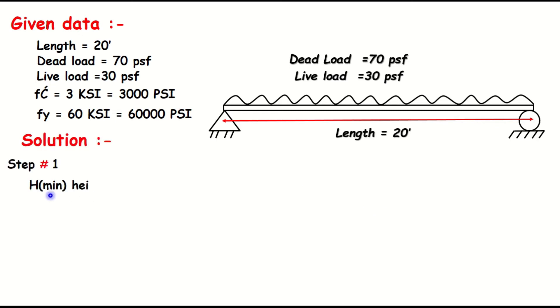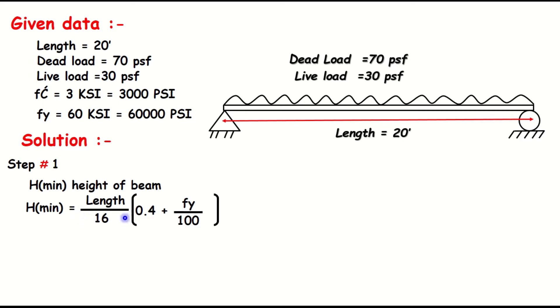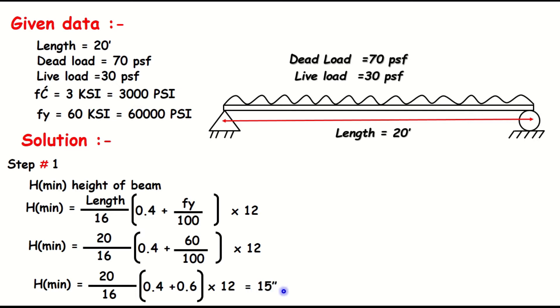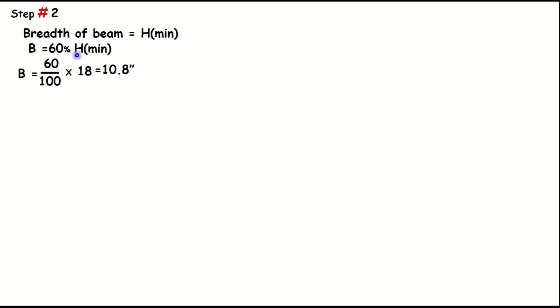Step number one: find the minimum height of beam. The minimum height of beam equals length divided by 16, multiplied by (0.4 plus fy divided by 100000), multiplied by 12. Calculating with fy = 60 ksi and length = 20 feet, h minimum comes out to approximately 18 inches. We use h = 18 inches.